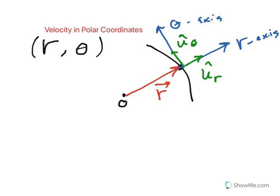In order to describe velocity in this coordinate system, we first define the position vector R as a vector. It has a magnitude R, which is the length of this vector, and since the R axis is defined as the extension of the position vector R, we simply multiply that magnitude by the unit vector U sub R. So R vector equals R times U sub R.